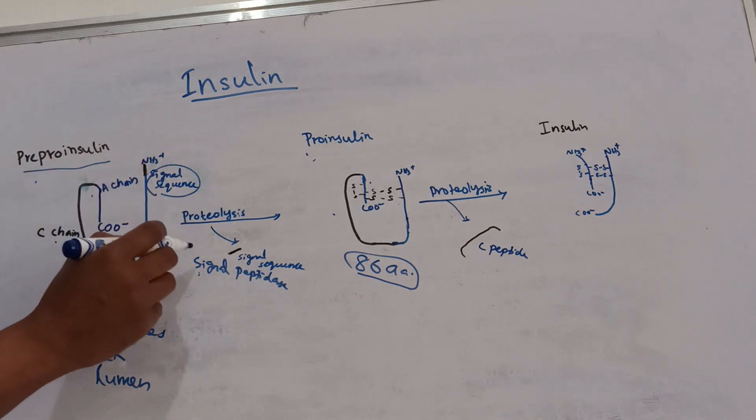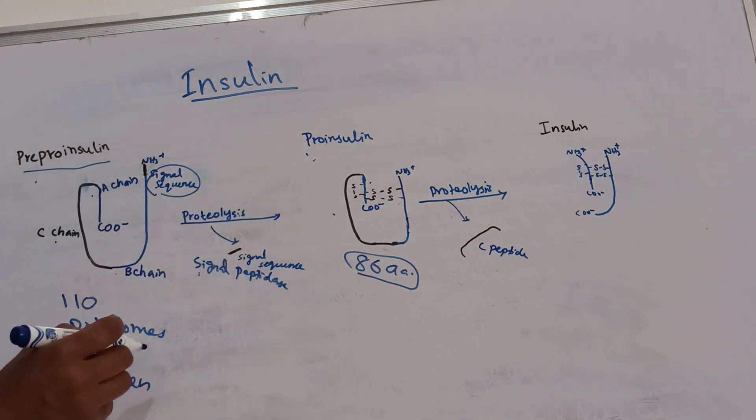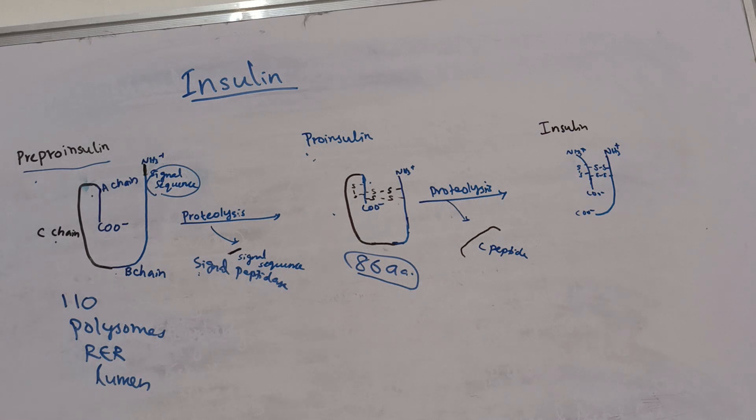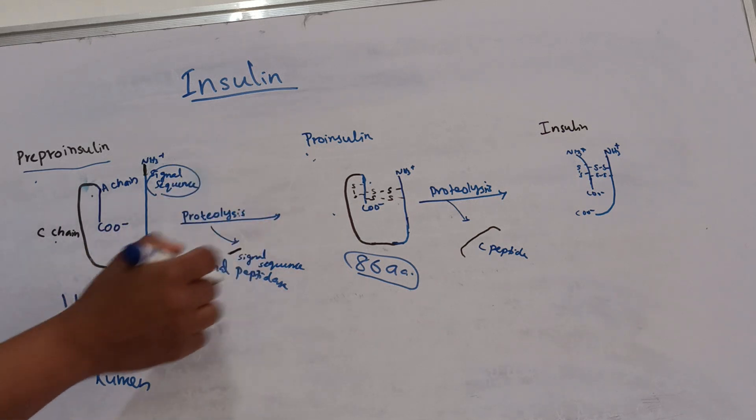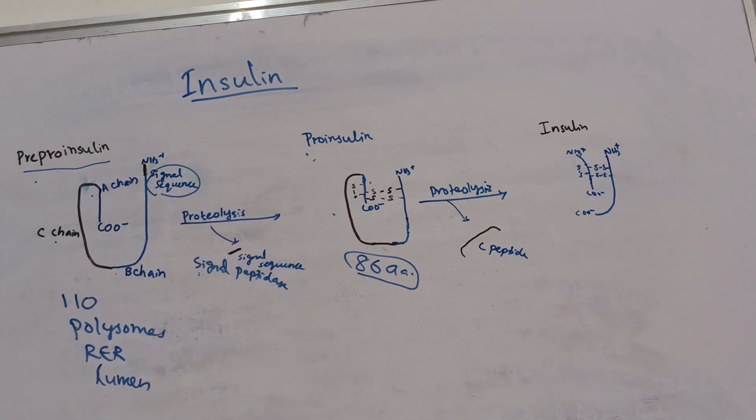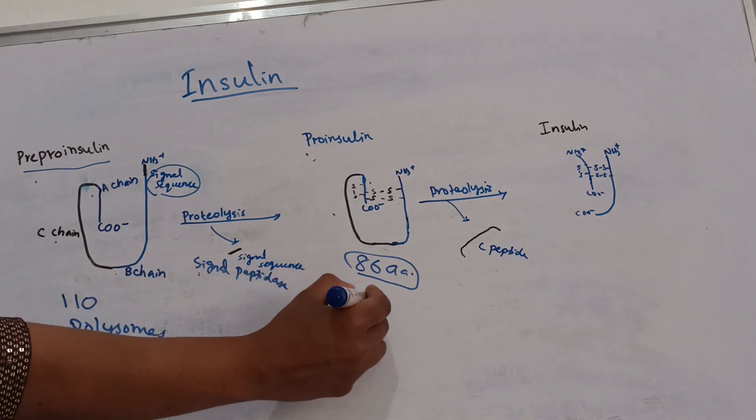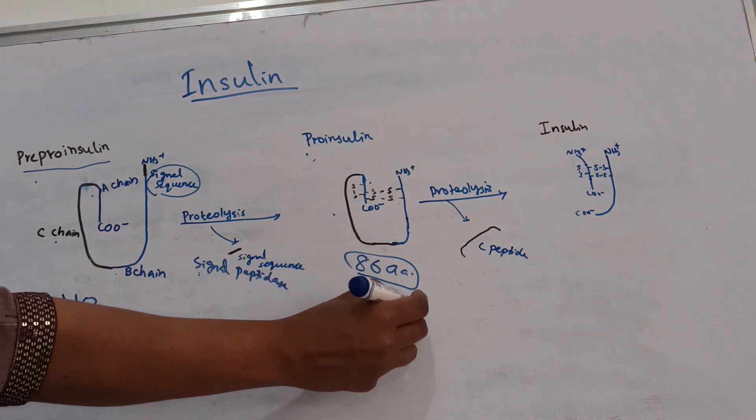This proinsulin contains small vacuoles or small vesicles and are detached from rough endoplasmic reticulum and fuses with cisternae of Golgi apparatus.